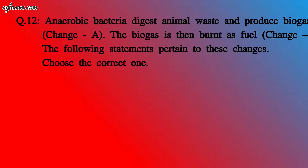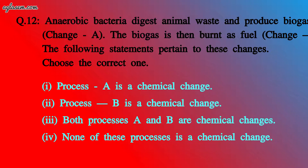Question 12: Anaerobic bacteria digest animal waste and produce biogas — Change A. The biogas is then burnt as fuel — Change B. Choose the correct statement: 1) Process A is a chemical change. 2) Process B is a chemical change. 3) Both A and B are chemical changes. 4) None is a chemical change. The correct answer is 3 — both processes A and B are chemical changes.